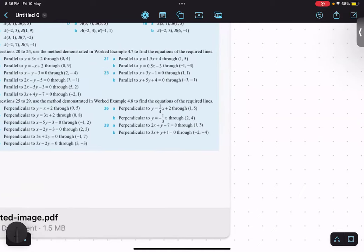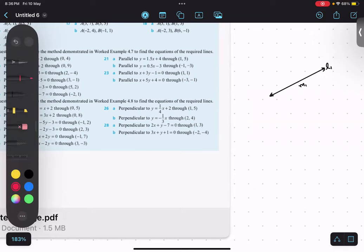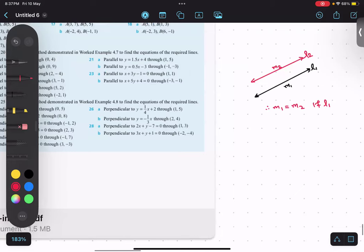Always remember if we have a line and there is a slope connected to it, suppose this is line 1, the slope would be m1. And let's say I have another line which is parallel to this. Since it is parallel, line 2 will have the same slope. So m1 will be equal to m2 if line 1 is parallel to line 2.